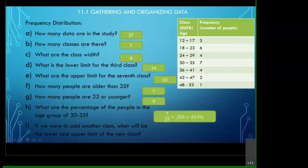So 0.259 becomes 25.9%. Later on, in Statistics 203, they may ask: if I pick one person at random, what is the probability they are in this age group? The probability is 0.259 — it's the same answer, just a different way to ask. That's seven out of 27, where 27 is the total number of data points added up.